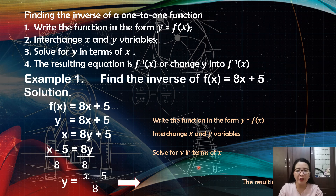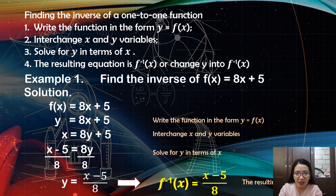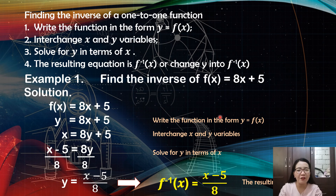The last step is to change y into f raised to negative 1 of x. So the inverse is f⁻¹(x) equals x minus 5 over 8. Therefore, the inverse of f(x) equals 8x plus 5 is f⁻¹(x) equals x minus 5 over 8.